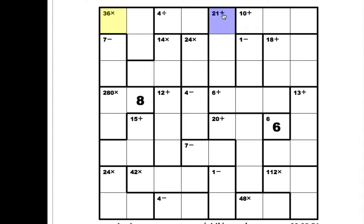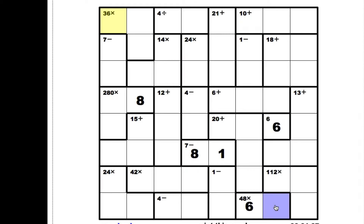We also know that to get 21, you can only get that with 6, 7, and 8, which means that in this 8-1 combination, the 8's going to have to go there and the 1's going to have to go there. 48 in a multiplication with 2 boxes can only be gotten with 6 and 8. We already have a 6 in this column, so 6 will go here and 8 will go there.